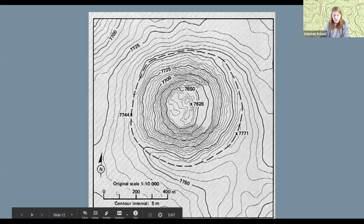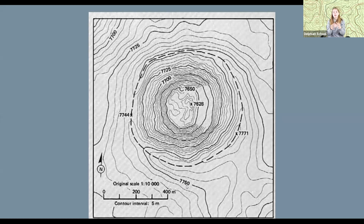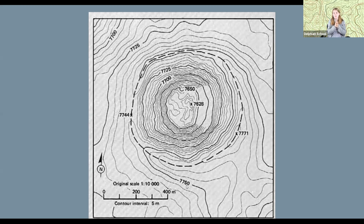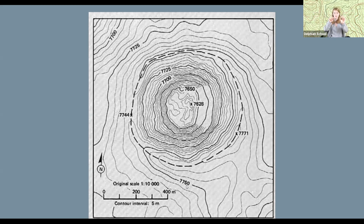The other important thing to look at is the scale. In the bottom left corner it says 'original scale 1 to 10,000.' That means one centimeter on the map equals 10,000 centimeters in real life. If I wanted to draw a map of a school, I wouldn't draw it the same size as the school. Instead, I'd scale it down — so if a hallway was 100 meters long, I could say every 10 meters equals one centimeter, and the whole 100-meter hallway would take only 10 centimeters on my map.